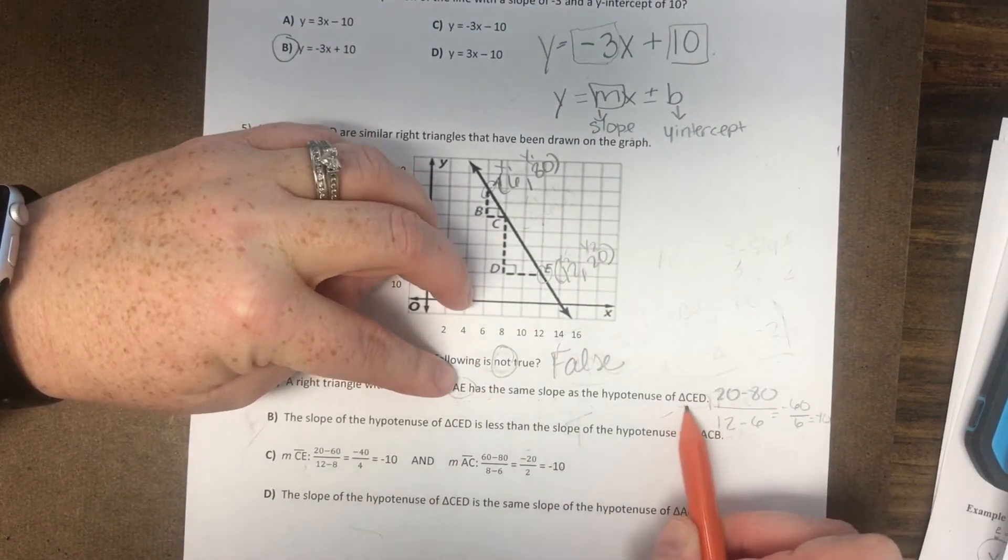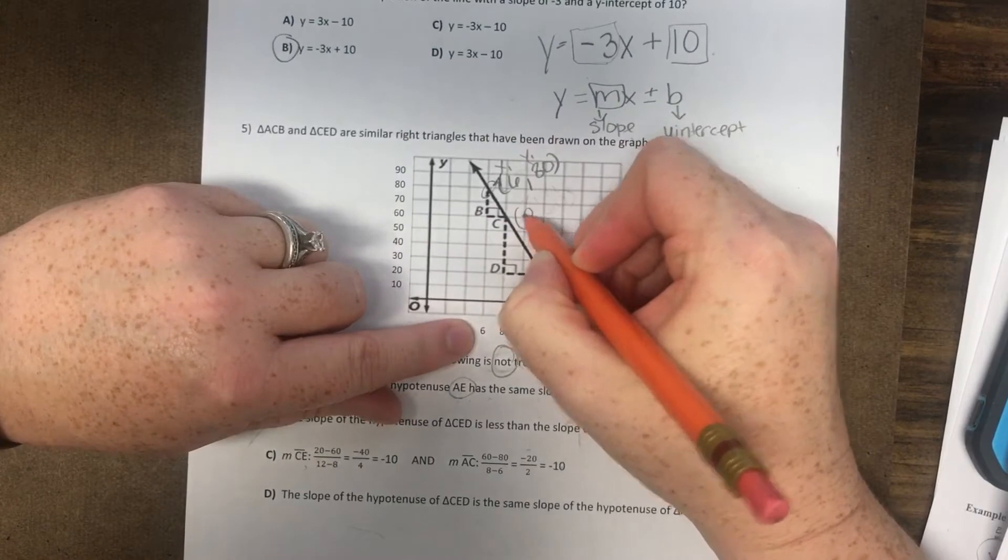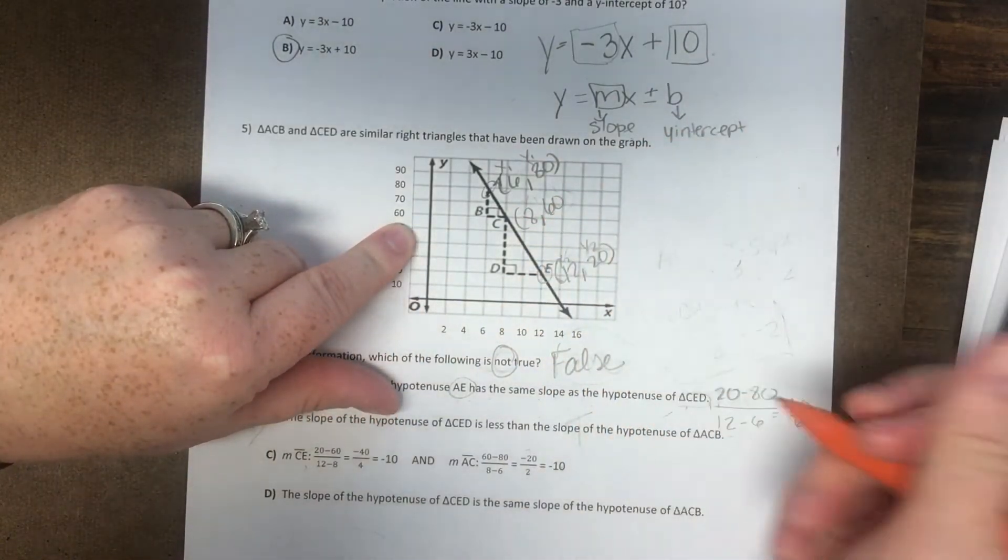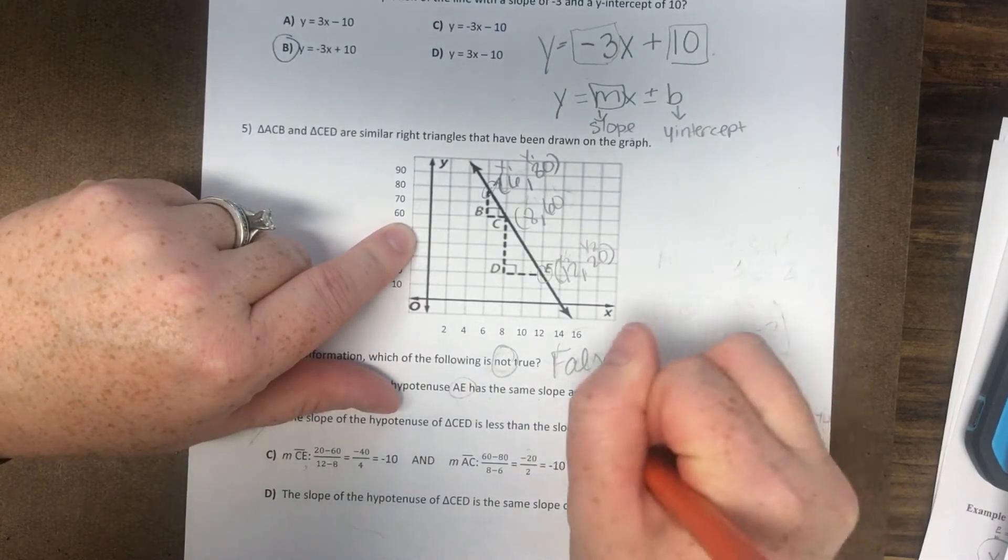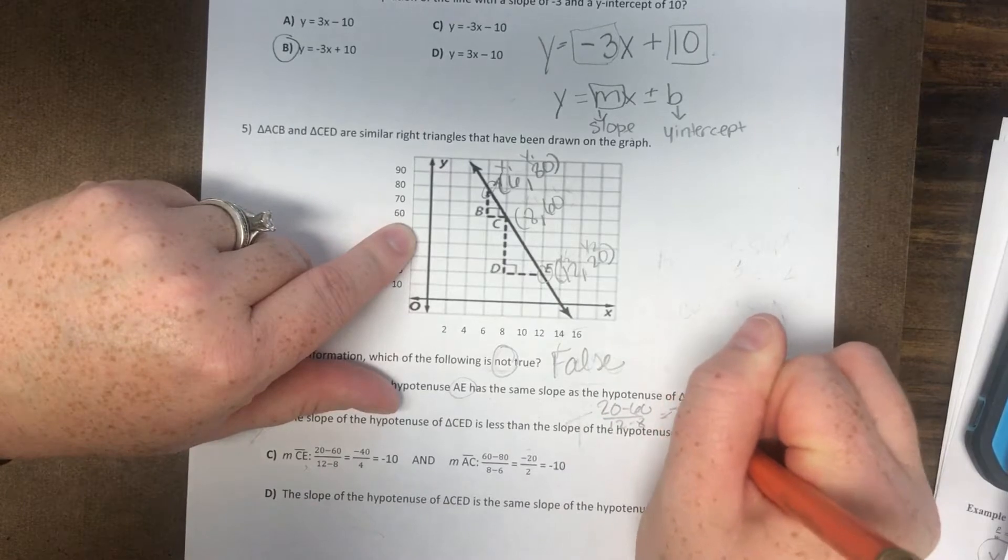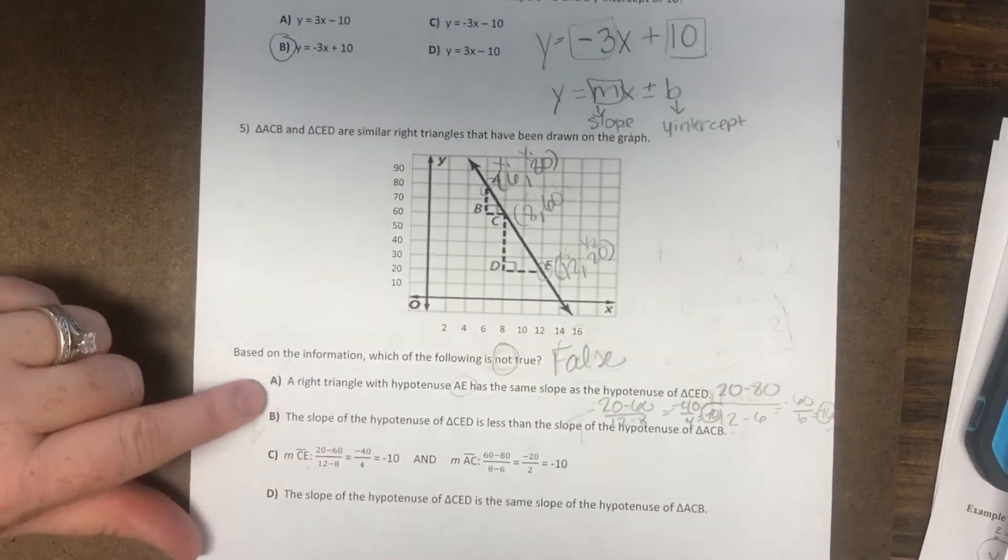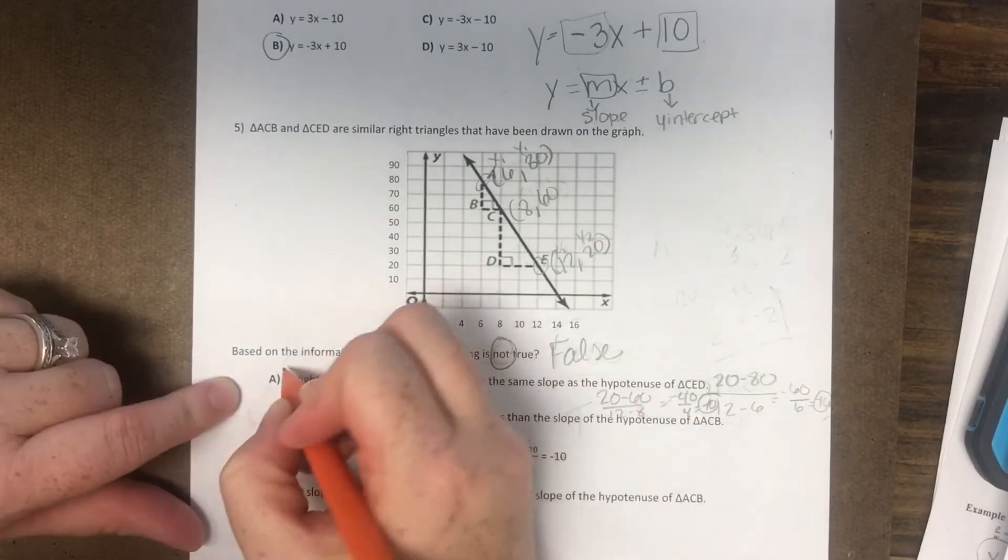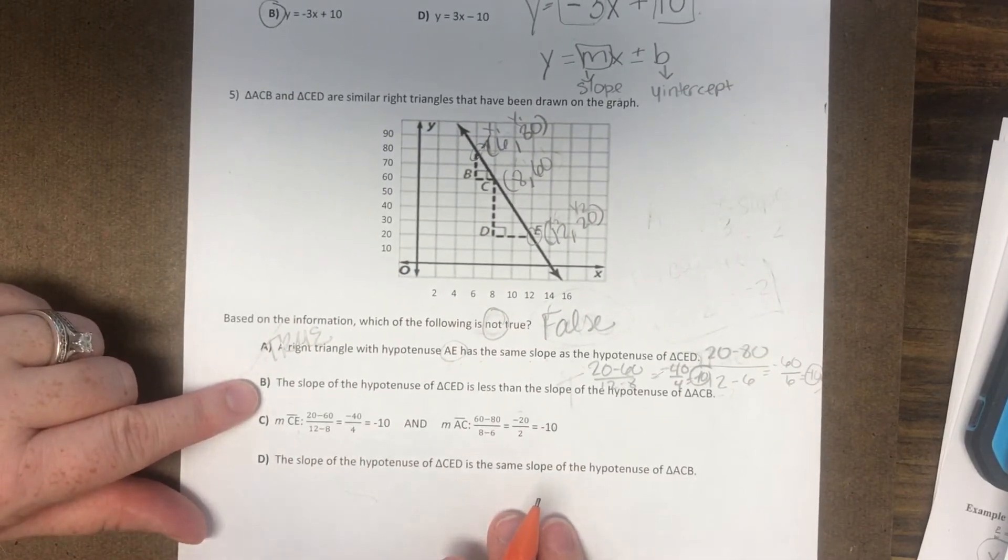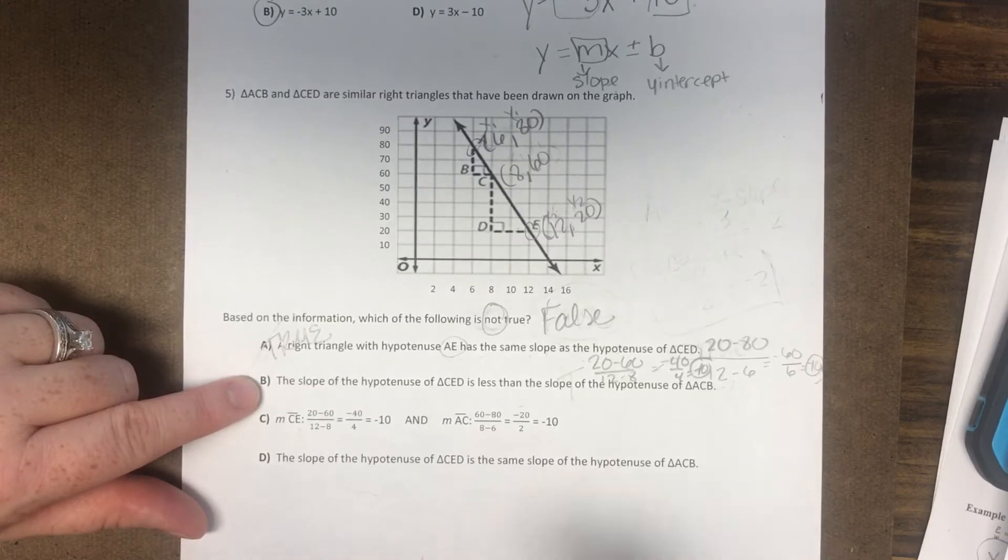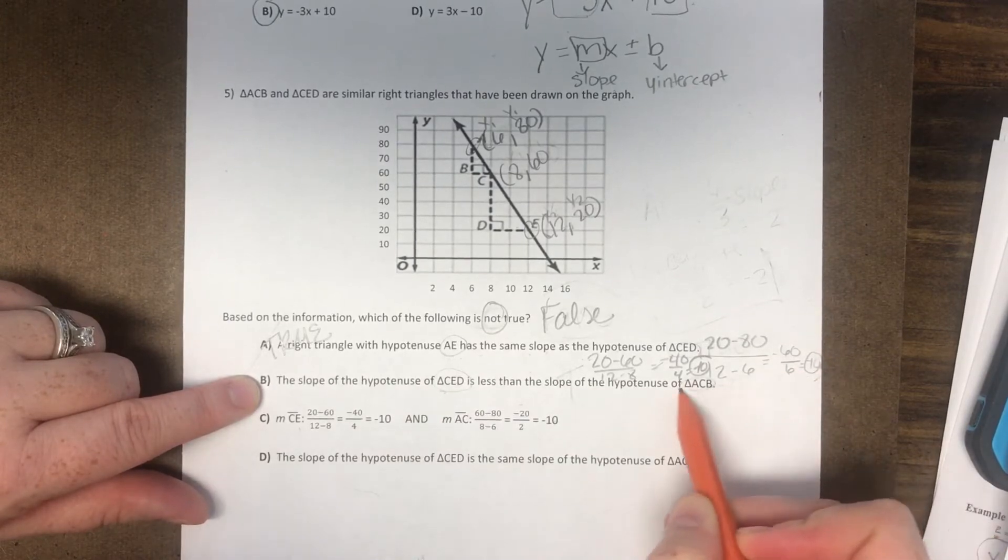And then the triangle CED would be these points. So we would label this point as 8, 60. So we would say 20 minus 60 over 12 minus 8, negative 40 over 4, which is negative 10. So negative 10 and negative 10. So their hypotenuse is the same. So that's a true statement. The slope of the hypotenuse CED is less than the slope of ACB.